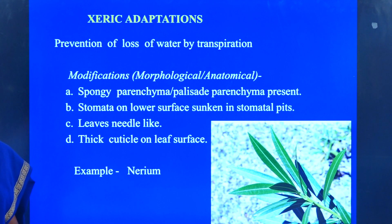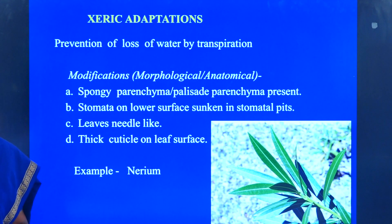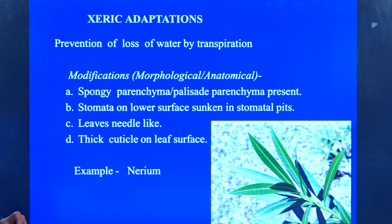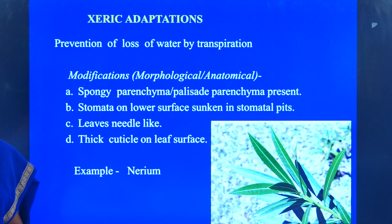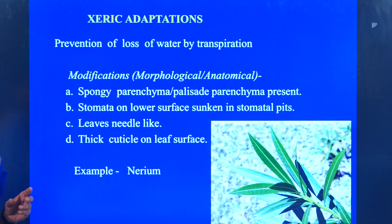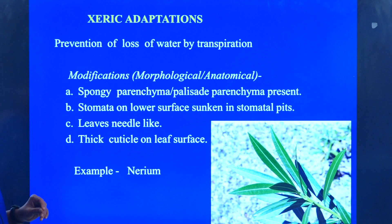Another plant we are going to learn in xeric adaptation is Nerium. The prevention of loss of water from the plant body — the leaf is modified in such a way to prevent the loss of water. What are all the modifications that can be seen in Nerium? When we observe Nerium, there is a presence of special structures.